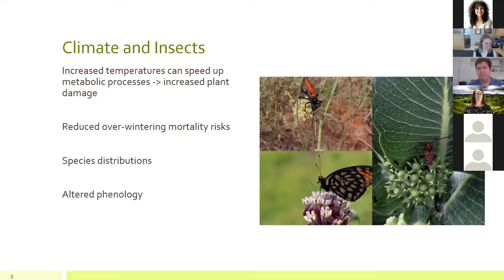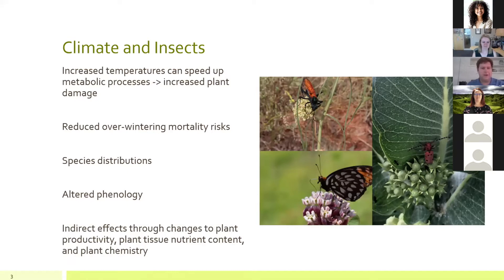Most of my pictures are of milkweeds because I'm studying milkweeds and the effects of drought on them for my dissertation. Indirect effects on insects can be seen through changes in plant chemistry and plant toxins. With milkweeds, stressed plants produce a greater amount of toxins that render them unpalatable to most insect herbivores, and even animals adapted to deal with these toxins — like monarch caterpillars — can succumb to those toxins under drought-stressed conditions.